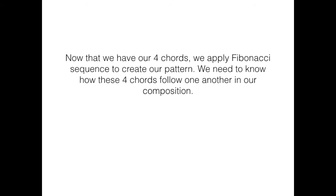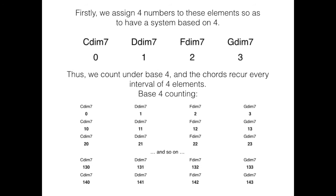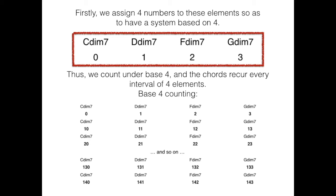Now that we have our 4 chords, we apply Fibonacci sequence to create our pattern. We need to know how these 4 chords follow one another in our composition. Firstly, we assign 4 numbers to these elements who has to have a system based on 4. C diminished 7th will be our element 0, F diminished 7th will be our element 1, F diminished 7th will be our element 2, and G diminished 7th will be our element 3. Thus, we count under base 4, and the chords require every interval of 4 elements.